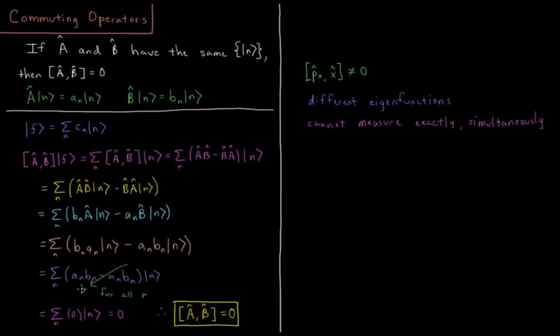So this is sum over all N, zero acting on N, which is equivalent to the zero operator. The zero operator acting on F gives us something which has a coefficient of zero on every single basis function.